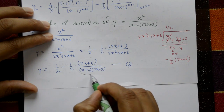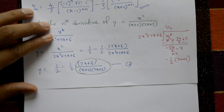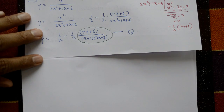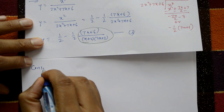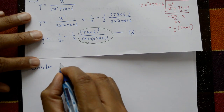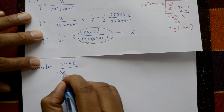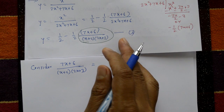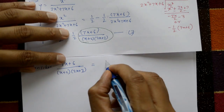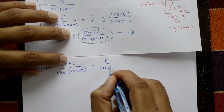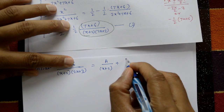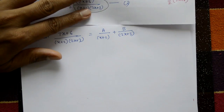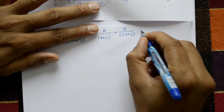This remainder part is a proper fraction. Find A and B: consider (7x+6) / [(x+2)(2x+3)] = A/(x+2) + B/(2x+3). Call this equation number 2.